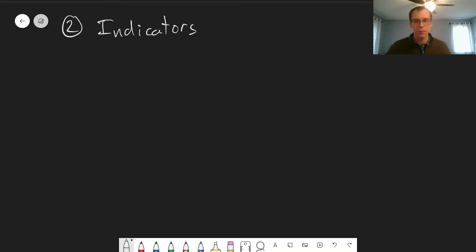Our second approach to finding the endpoints of acid-based titrations is to use indicators. So these are colored molecules, a variety of colors, that change color depending on their protonation.